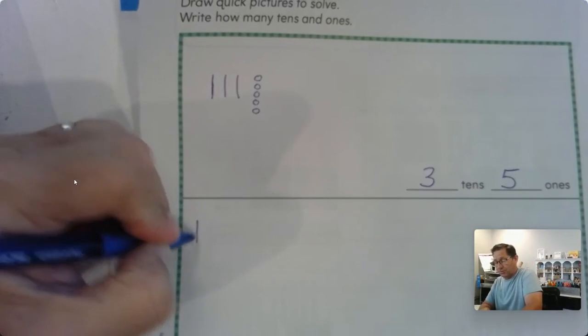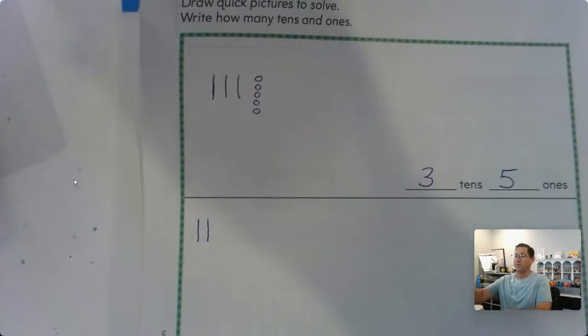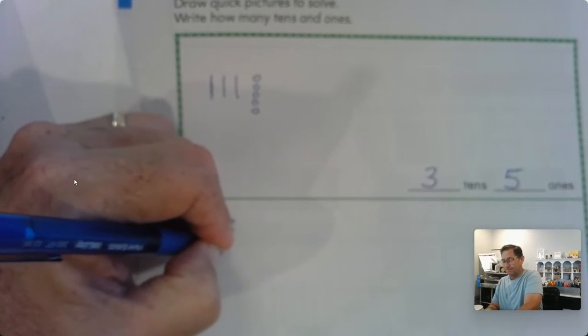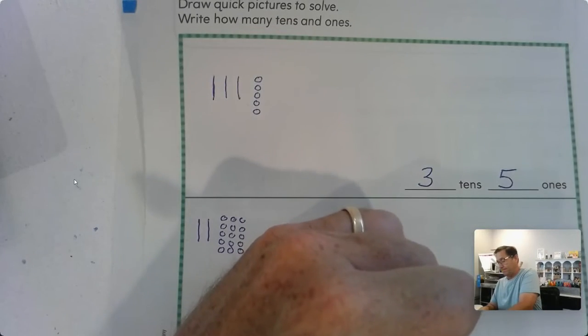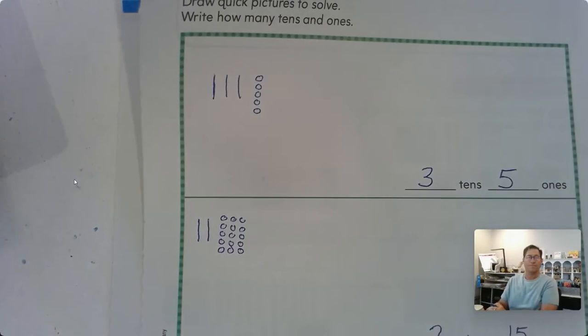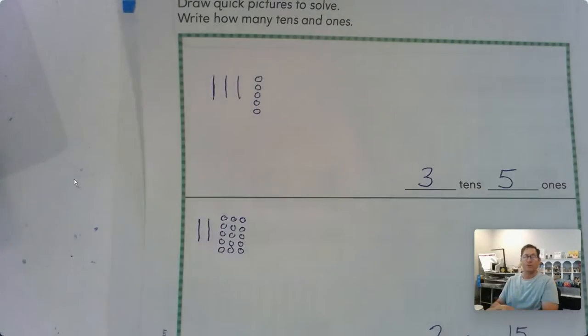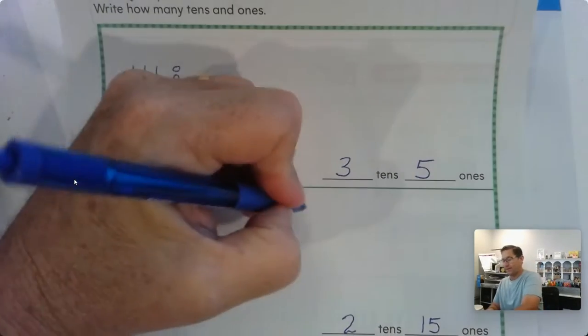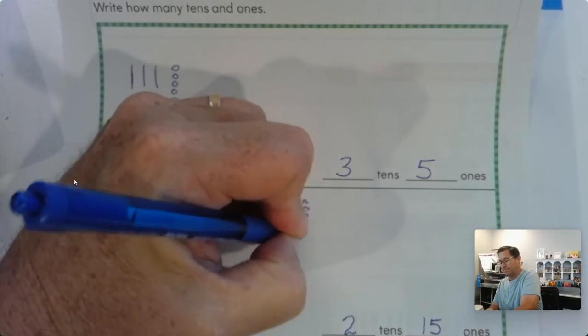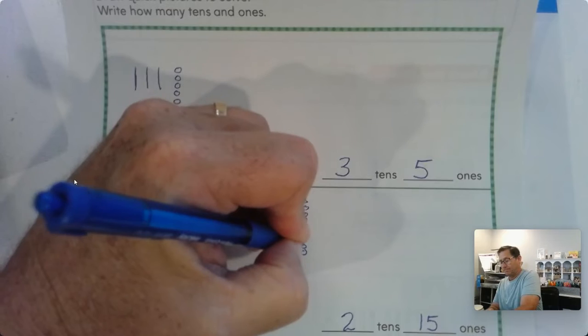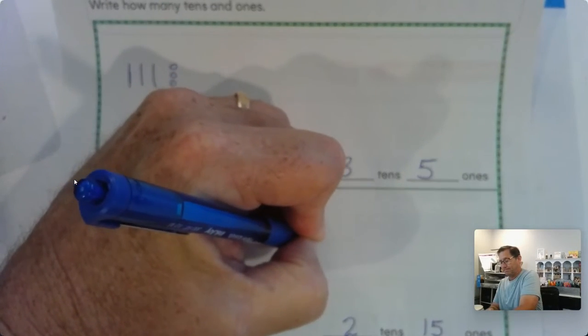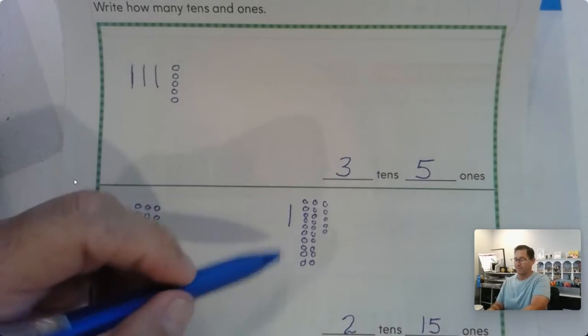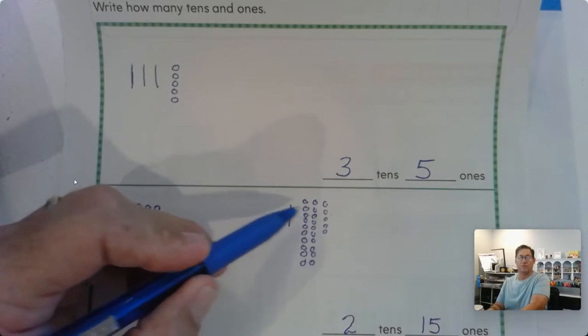I could have two tens, which would be 20, and then I could have 15 ones or 15 single books. So either one of those is a correct way to show 35. Some of you might have had one tens and 25 ones. 10, 20, 25. So one ten and 25 ones would give us 35.